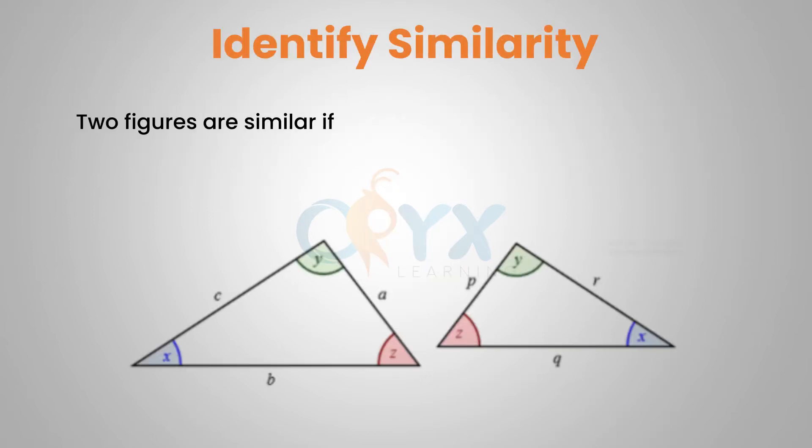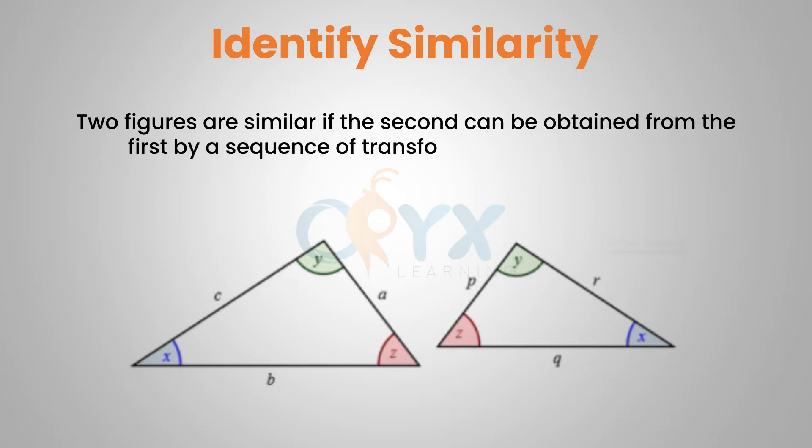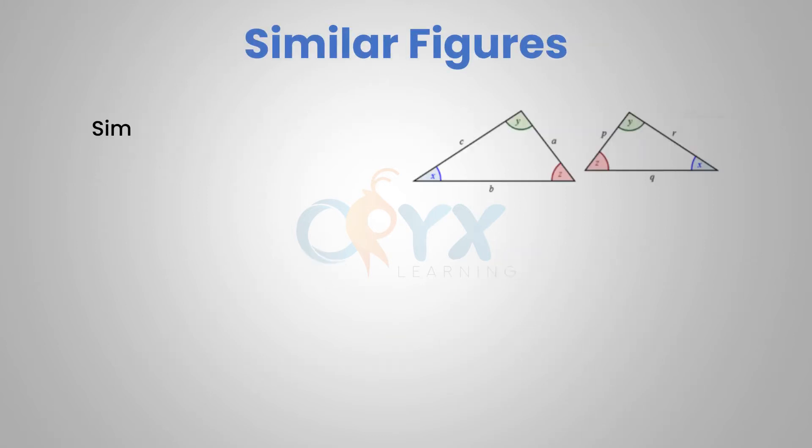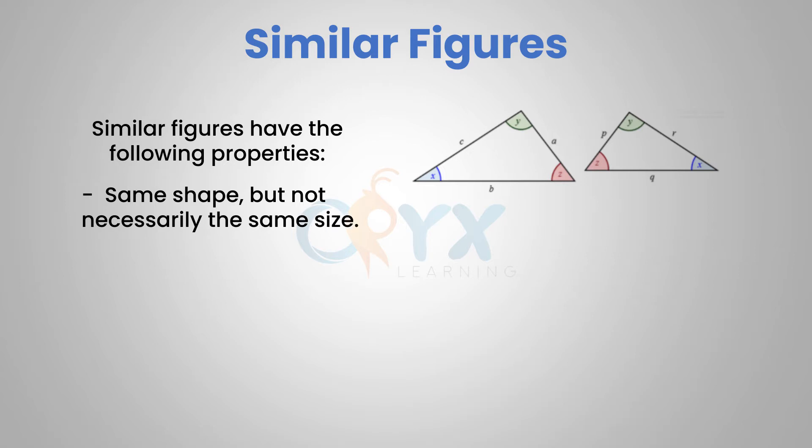Two figures are similar if the second can be obtained from the first by a sequence of transformations and dilations. Similar figures have the following properties. They have the same shape but not necessarily the same size.